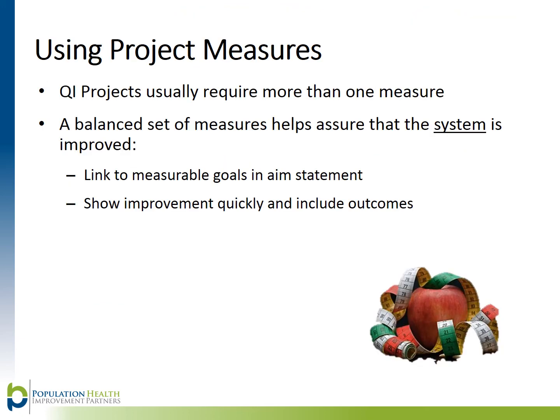QI projects usually require more than one measure. Having a balanced set of measures helps assure your stakeholders that the system has improved. In order to emphasize this, remember to link these final measurable goals in your aim statement, and use PDSA cycles to show improvement in a rapid fashion. When presenting data, always share the outcomes to answer the 'so what' question, and always use qualitative data to give more meaning and context to your numbers.